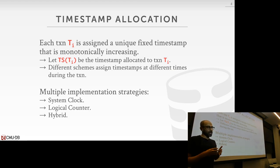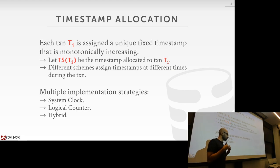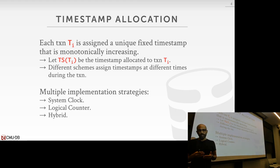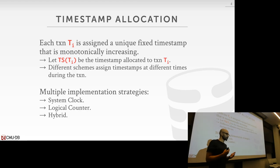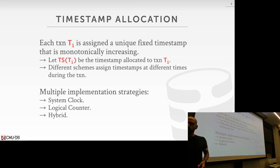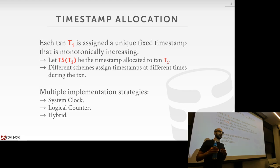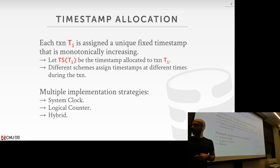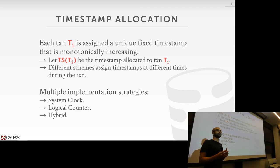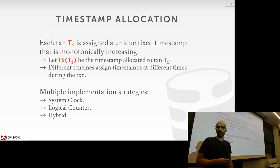So how are these timestamps assigned? They are unique, fixed numeric values with two important characteristics. First, they must be monotonically increasing — always going forward in time. Second, they must be unique values, so no two transactions can share the same timestamp because of that monotonically increasing property.